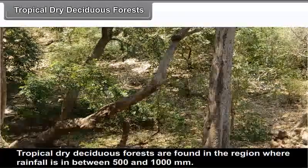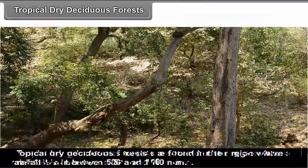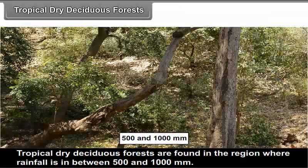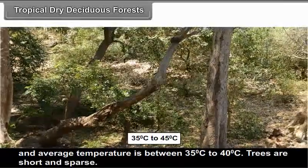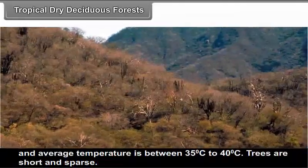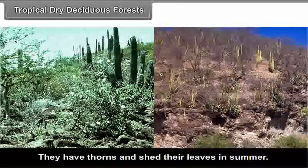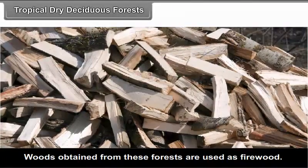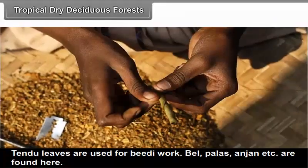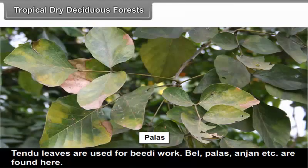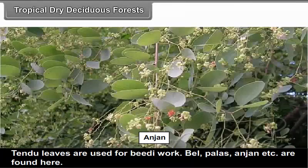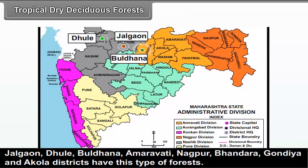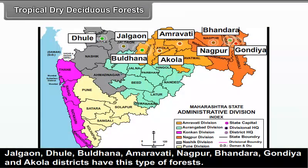Tropical dry deciduous forests are found in regions where the rainfall is between 500 and 1000 mm and the average temperature is between 35 to 40°C. Trees are short and sparse, have thorns and shed their leaves in summer. Woods obtained from these forests are used as firewood. Tendu leaves are used for bidi work. Bell, Palas, Anjan, etc. are found here. Yavatmal, Latur, Buldhana, Amravati, Nagpur, Bhandara, Gondiya and Akola districts have this type of forests.